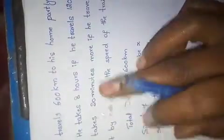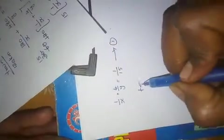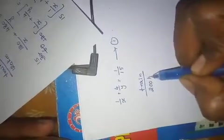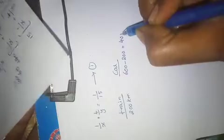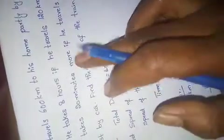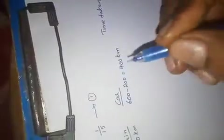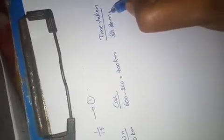Now see the next case. He takes 20 minutes more, meaning the total time is 8 hours 20 minutes. He travels 200 km by train and rest by car. The distance by car is 600 minus 200, which is 400 km. The time taken is 8 hours 20 minutes.